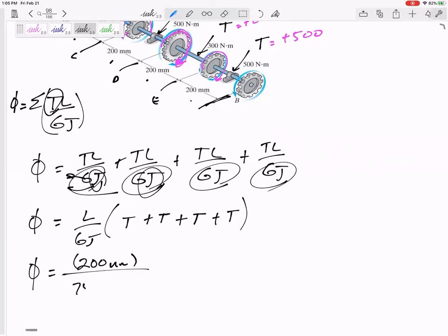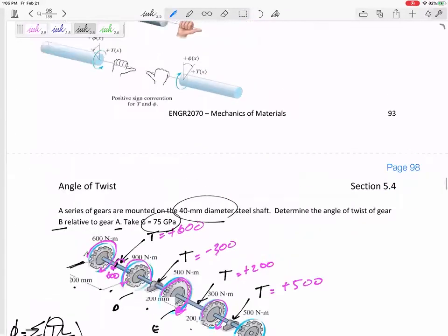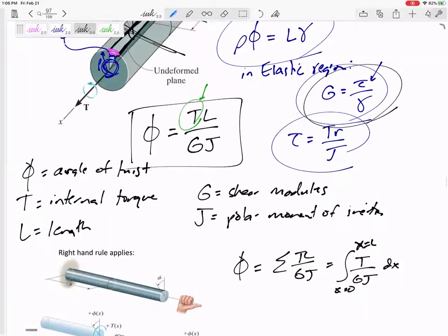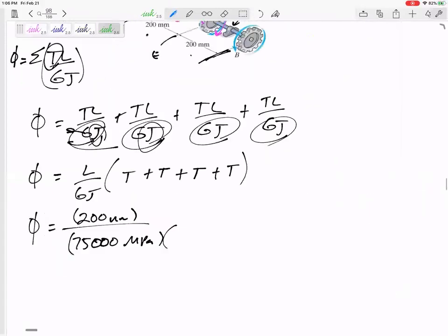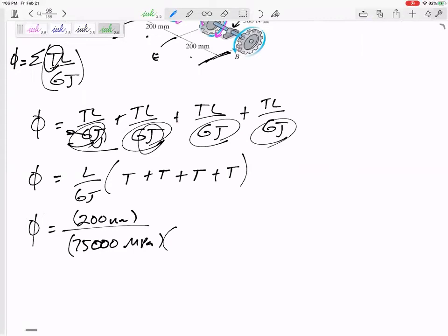75 GPA, let's do 75,000 MPA. TL over GJ is unitless, but it's in radians. Not degrees. It's an angle of twist that's in radians. Radians is kind of a dimensionless unit. So all of my units should cancel out.